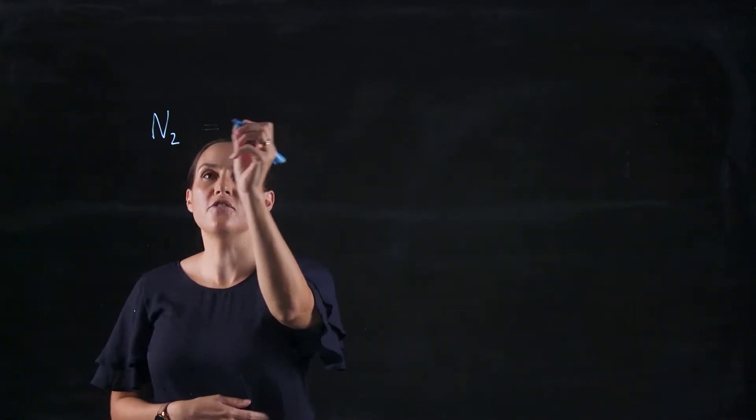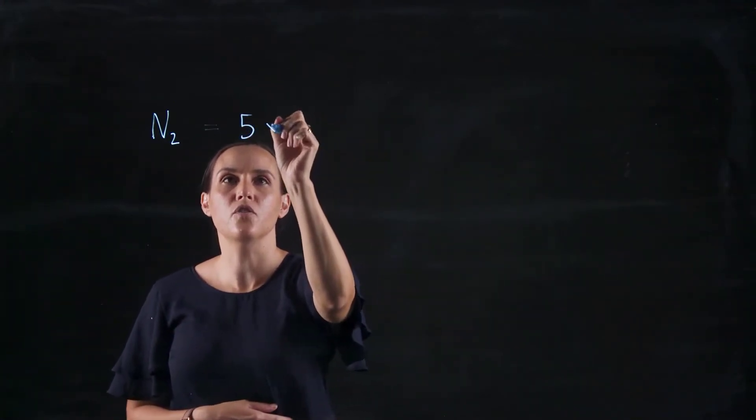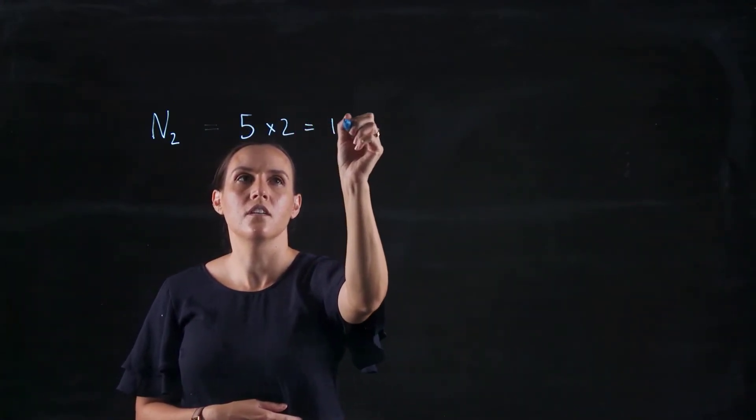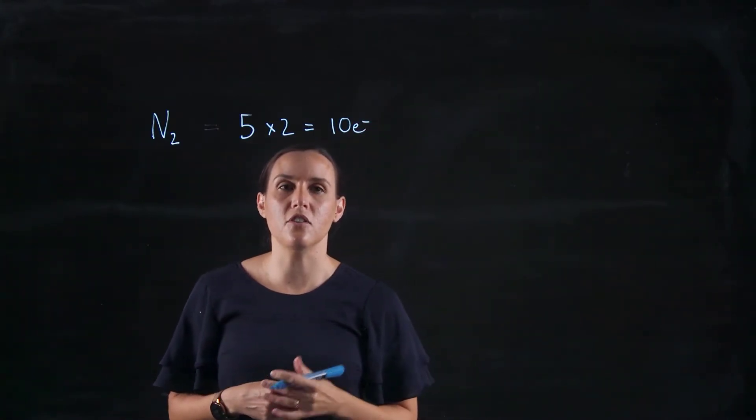So each nitrogen would bring along five electrons, and we've got two nitrogens. So it's ten electrons in total that will be used to make this structure.